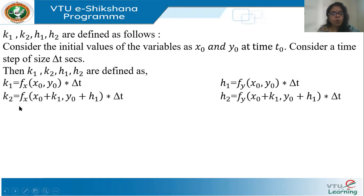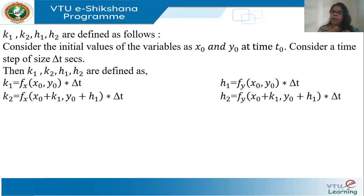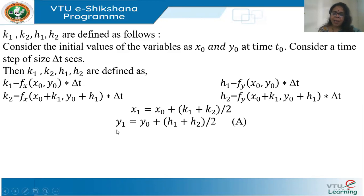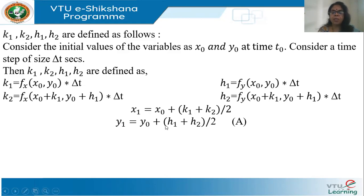Once I calculate k1 and h1, k2 is defined as fx evaluated with x updated to x0 + k1 and y updated to y0 + h1. Similarly, I calculate h2. Using the initial values, I find the coefficients k1, k2, h1, and h2. Then x1 = x0 + (k1 + k2)/2 and y1 = y0 + (h1 + h2)/2, giving the values at time step t0 + delta-t.